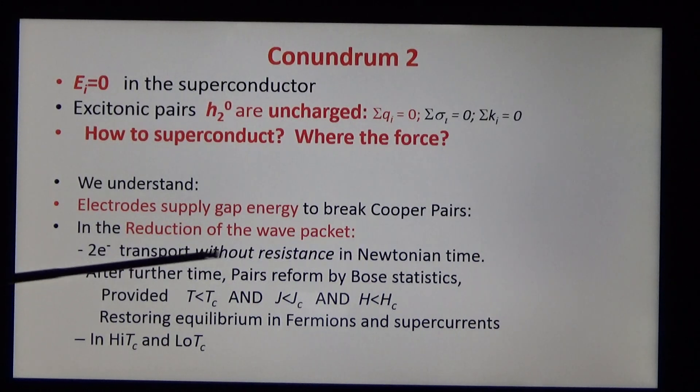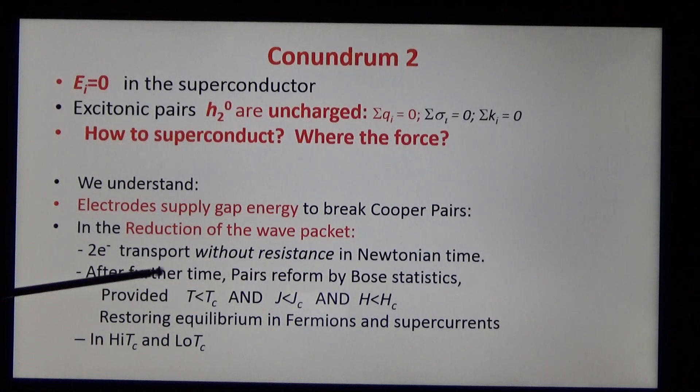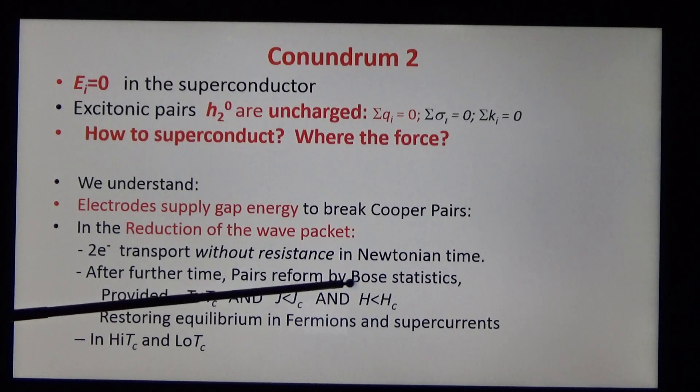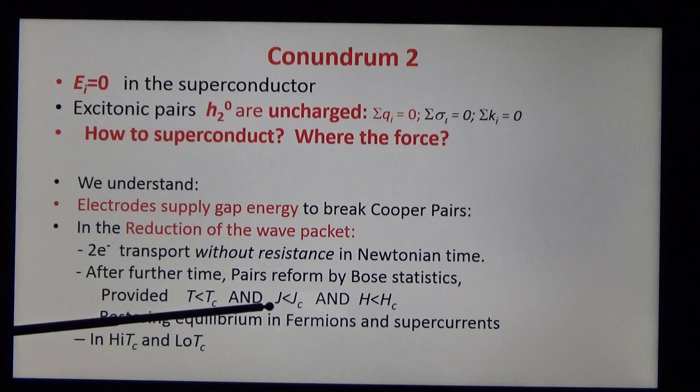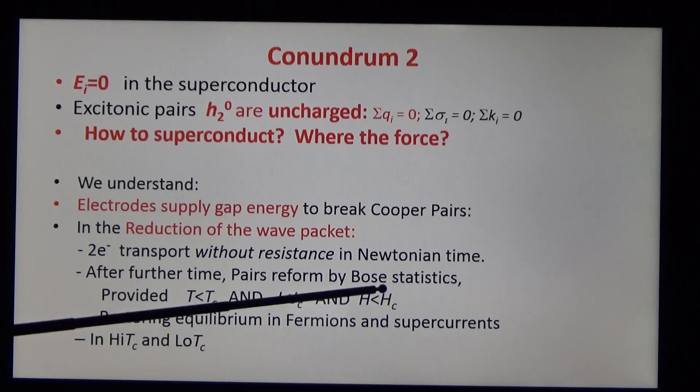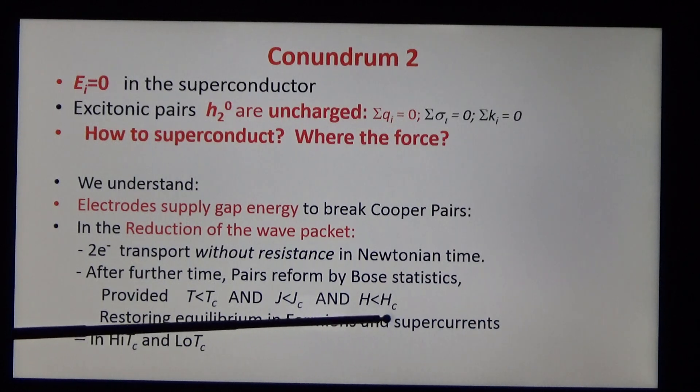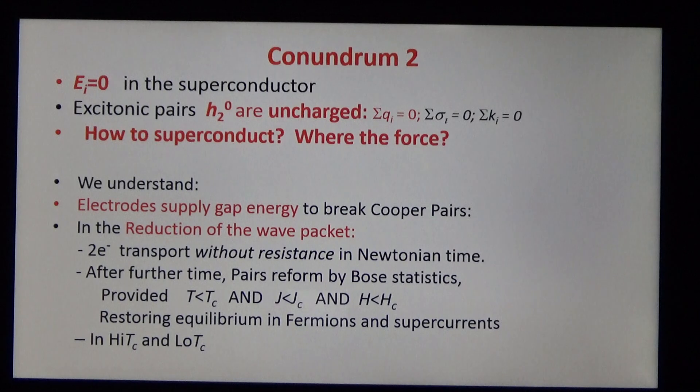We understand that the electrodes supply the gap energy to break the Cooper pairs. In the reduction of the wave packet, two electrons transport without resistance in Newtonian time. And after further time, pairs reform by Bose statistics. Provided that temperature, current density, and magnetic field intensity are all below critical. This restores, the reformation restores the equilibrium in fermions and supercurrents. The same happens in high TC and low TC.